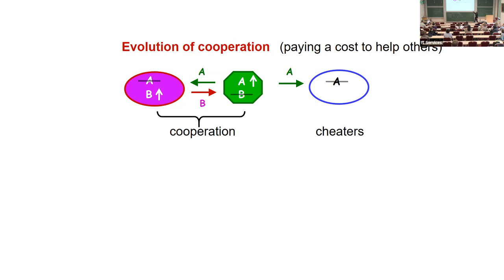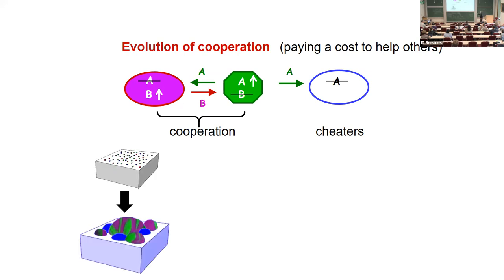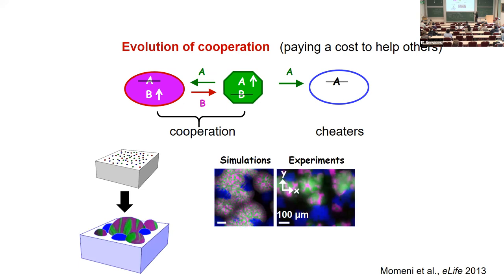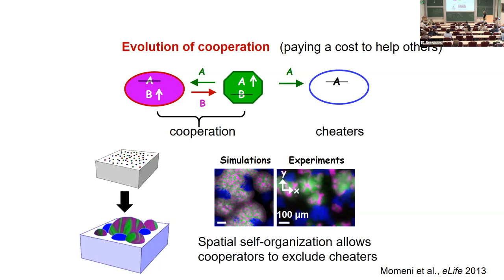Of course, we can have cheaters that take but do not reciprocate. Because they do not pay the cost of reciprocation, those cheaters would grow faster than the cooperators, so you would predict cheaters will take over the community. But we can mix the three types of cells at one-to-one-to-one in a spatially structured environment — placed on top of a growth pad — and what we see in both simulations and experiments is that the two cooperating strains are mixed, and the blue cheaters are spatially isolated. Spatial self-organization allows cooperators to exclude cheaters.